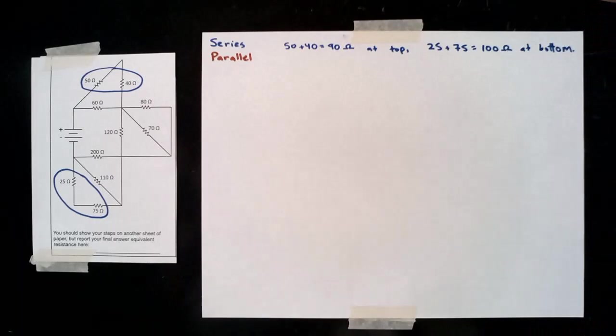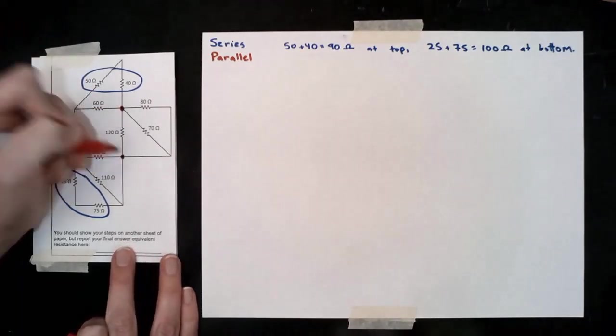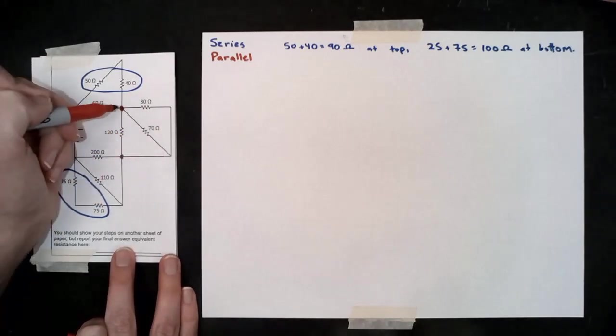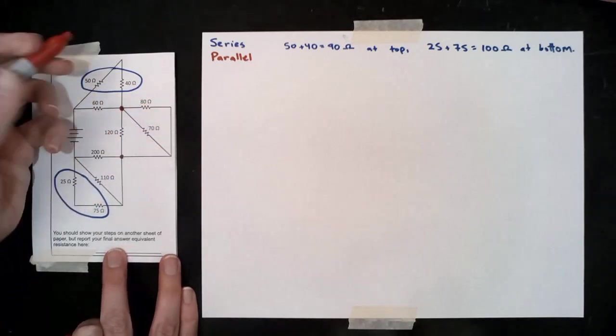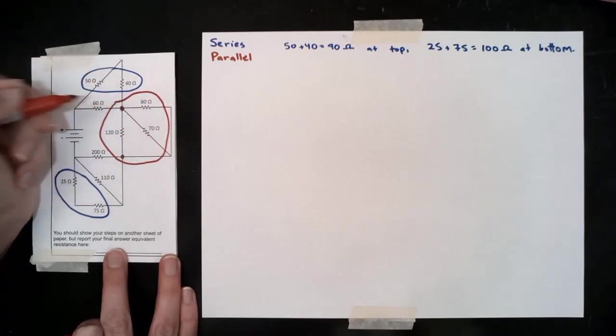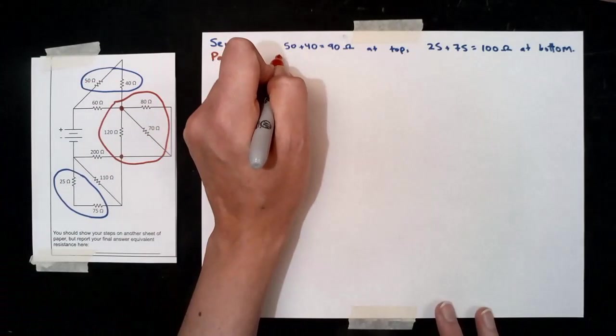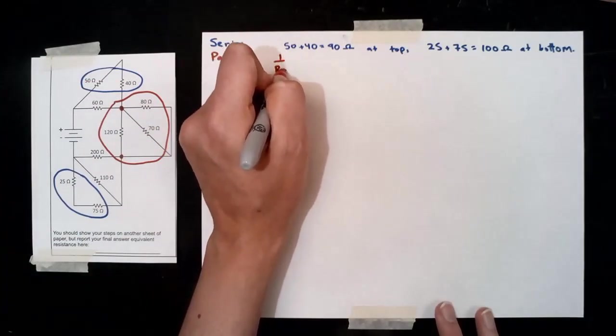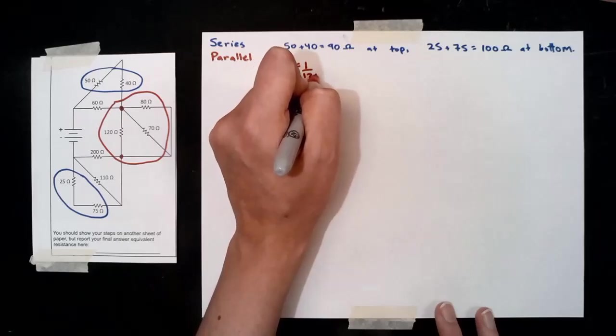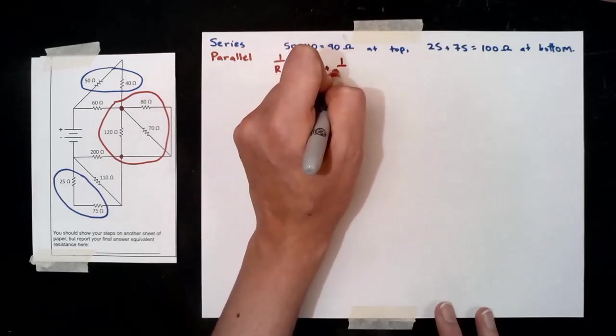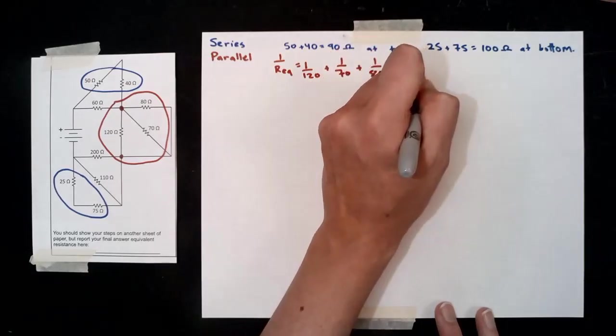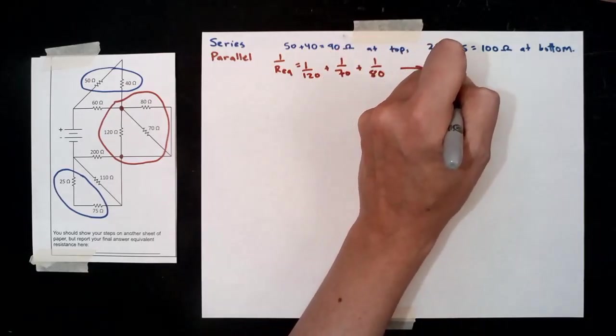When we're trying to look for parallel, we're looking for places where multiple resistors, like these three, are all connected to the same two points with nothing but wire between them. There can't be additional resistors in the way. For that one it's a little bit tougher: one over the equivalent resistance is equal to one over each of those resistor values.